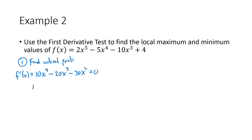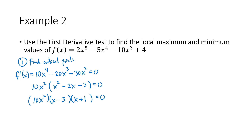That looks a little nasty, but we can factor. I can factor out a 10 and an x squared, giving x squared minus 2x minus 3. Then I can further factor that as (x minus 3)(x plus 1), with 10x squared still out front. Setting each factor equal to zero: 10x squared equals zero gives x equals zero; x minus three equals zero gives x equals three; x plus one equals zero gives x equals negative one. So we have three critical points.